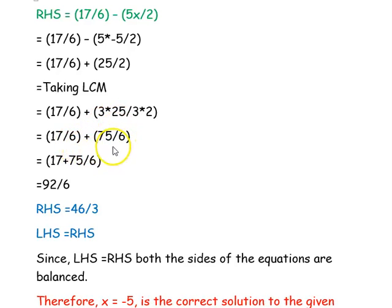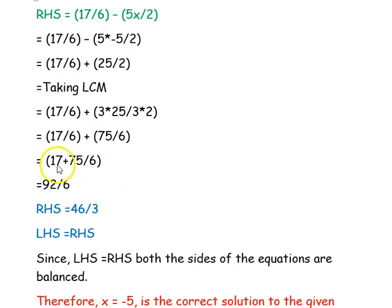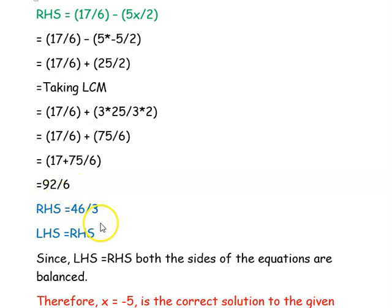The denominator 6 is common, so we add the numerators: 17 plus 75 divided by 6, which equals 92 divided by 6. Reducing this fraction gives 46 divided by 3.